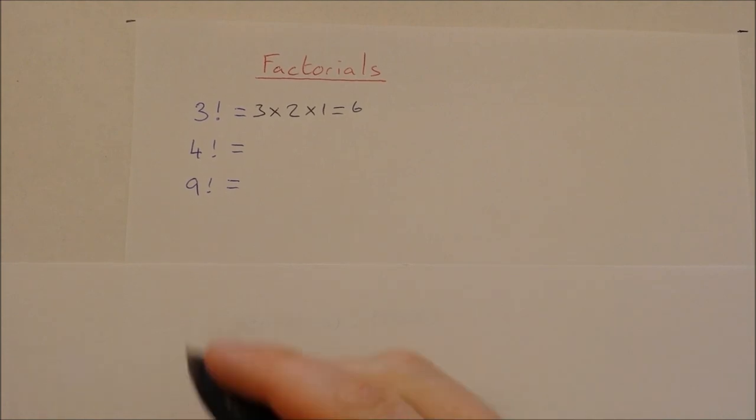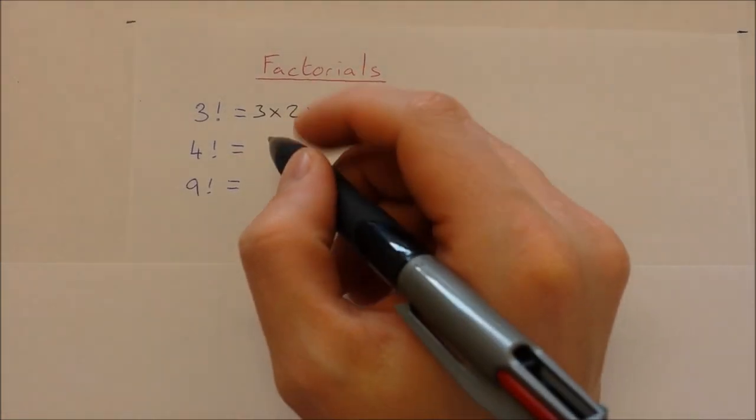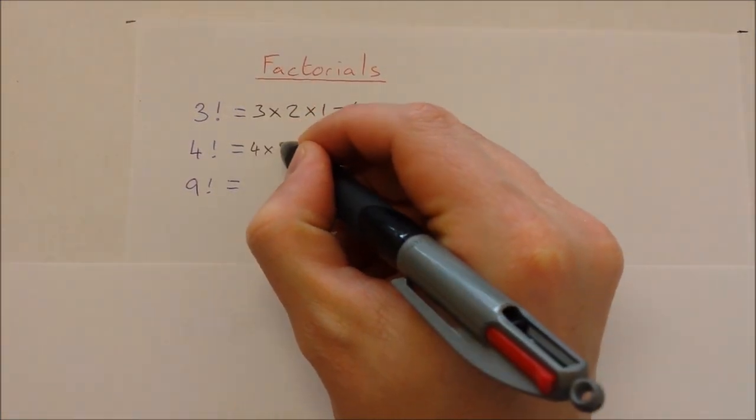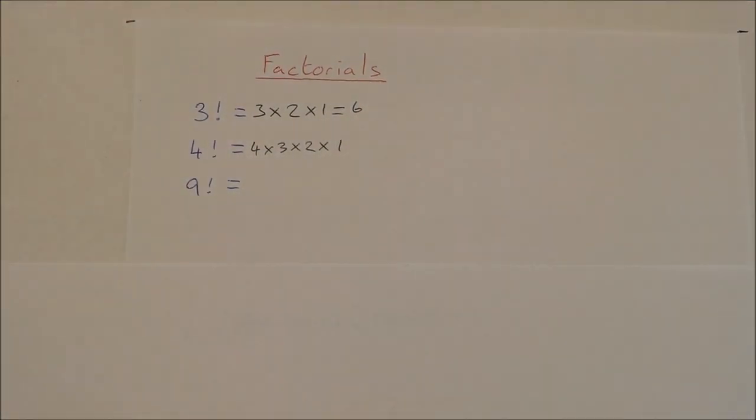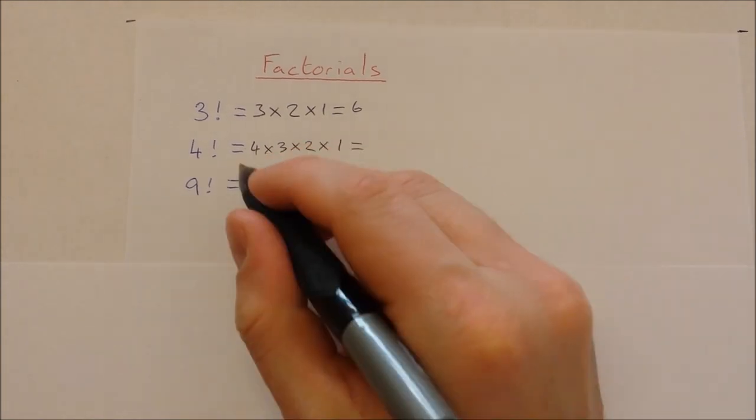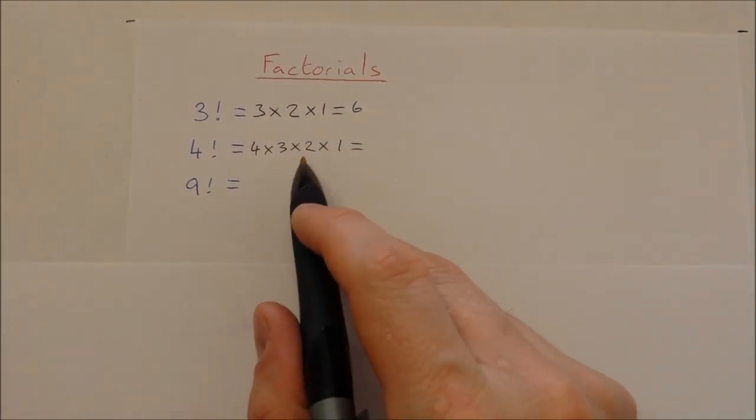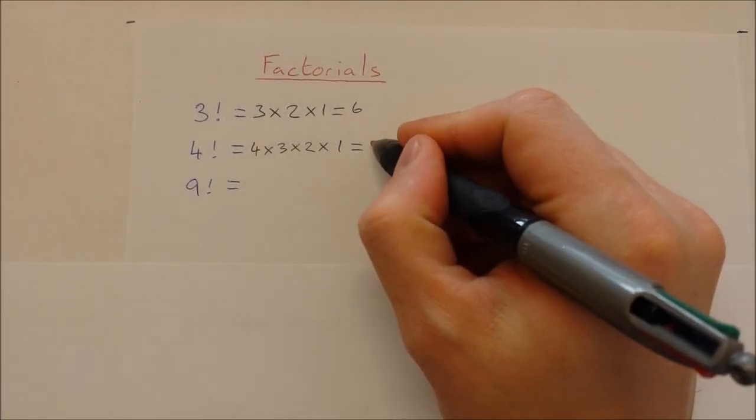4 factorial then would be 4 all the way down to 1. So it's 4 multiplied by 3 multiplied by 2 multiplied by 1. And then 4 factorial will be 4 by 3 is 12, by 2 is 24, by 1 is 24.